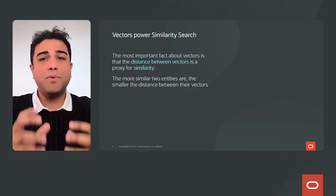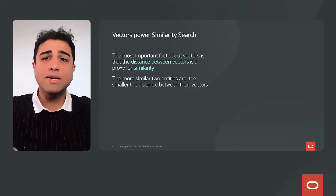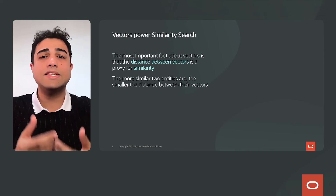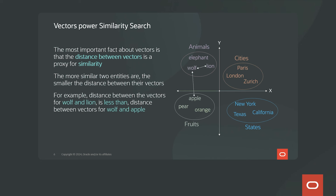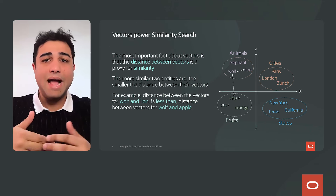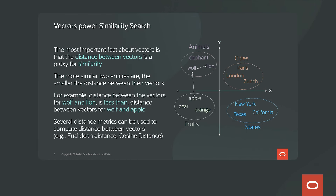Vectors have a key property: distance between vectors is a proxy for similarity. The more similar two entities are, the shorter the distance between their vectors. For example, in a two-dimensional vector representation, animals cluster in one quadrant, cities in another, fruits in another, and states in another. Wolf and lion, both being animals, have a small vector distance, but wolf and apple have a larger distance because they are dissimilar. There are several distance metrics used to compute distances between vectors — the most popular are Euclidean and cosine distance.